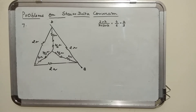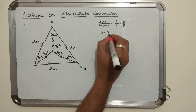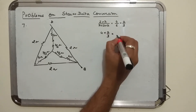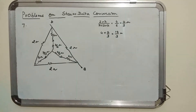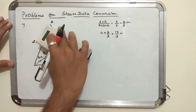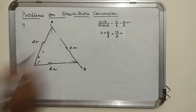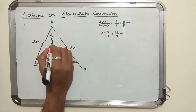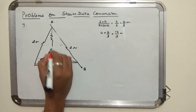Now 4 ohm and 2/3 ohm are in series, giving 4 + 2/3 = 14/3 ohms. All three branches give 14/3 ohms each.